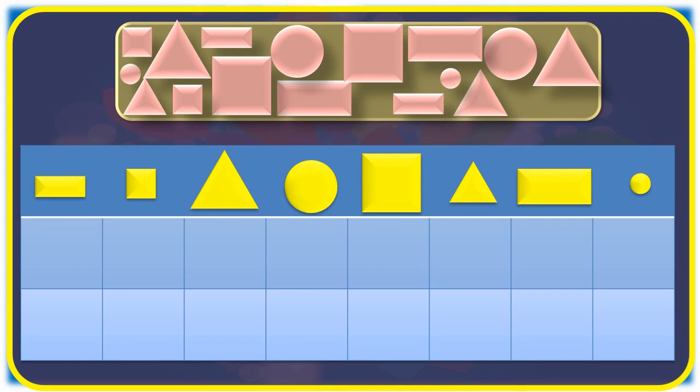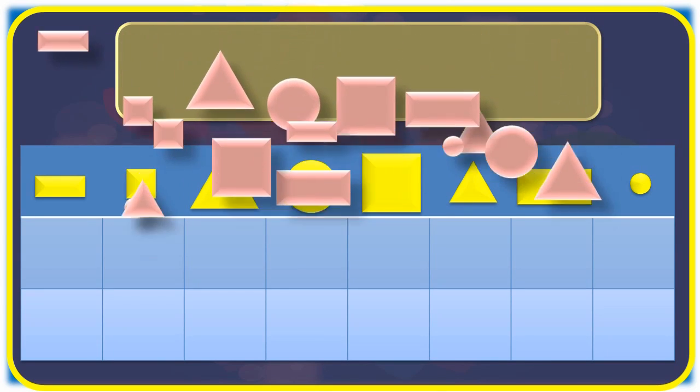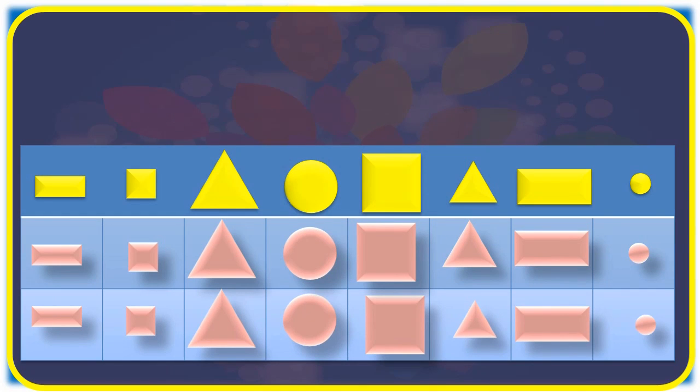Here, we have different objects of rectangles, circles, squares and triangles. So, by observing these objects, we can arrange this in a group like this.